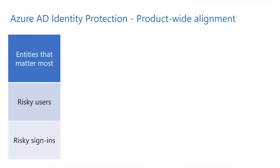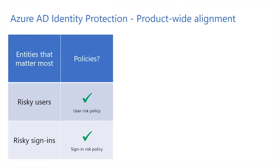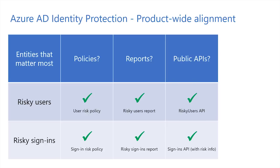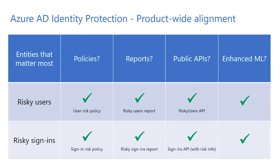To sum up, we reached out to a lot of IT admins and asked them some very tough questions. We asked them about their dreams and learned about their nightmares instead. Their top-trending nightmares were risky users and risky sign-ins — these are the entities they were most concerned about. We have aligned the entire Identity Protection around these entities. IT admins can now have automated policies, detailed reports, powerful APIs, and enhanced machine learning for both risky users and risky sign-ins.